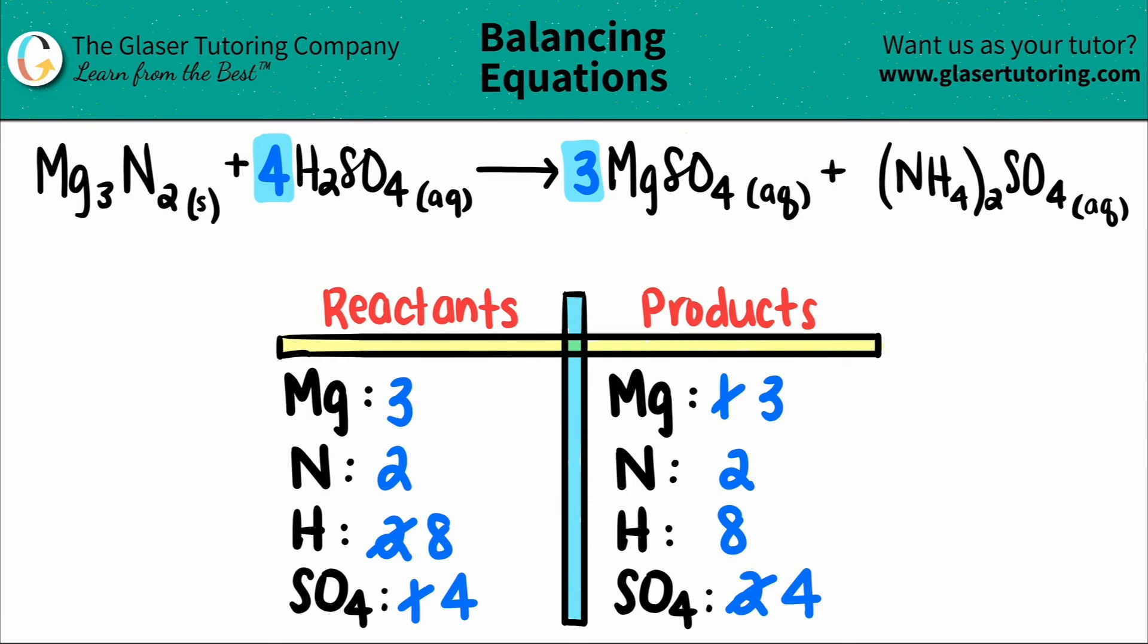So the balanced equation would be one Mg3N2 plus four H2SO4s, and that will yield us three MgSO4s plus one (NH4)2SO4.